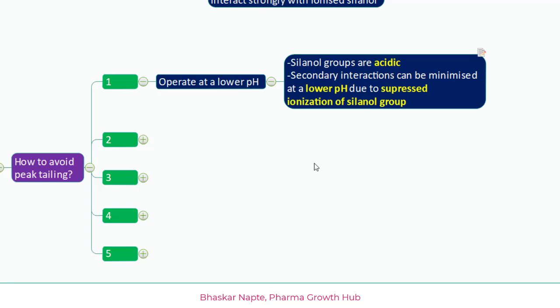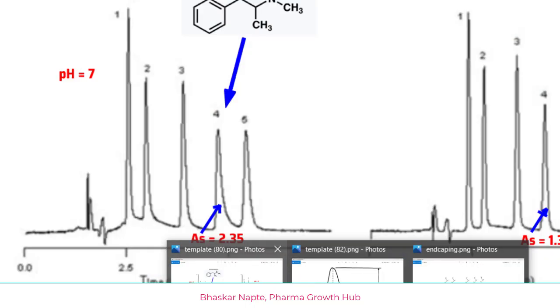The silanol groups are acidic in nature, and secondary interaction is possible because of the ionization of silanol groups. To minimize and suppress the ionization of silanol groups (SiOH), you maintain an acidic pH — in an acidic environment these silanol groups will not undergo ionization. So the straightforward solution is to maintain the mobile phase pH on the acidic side.